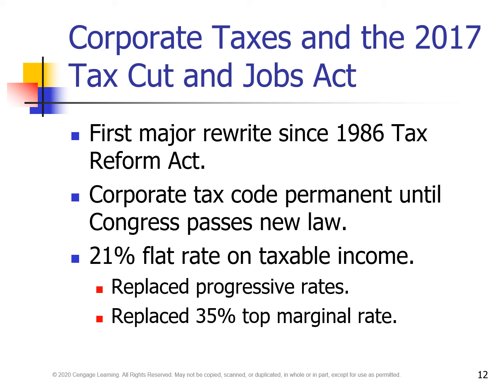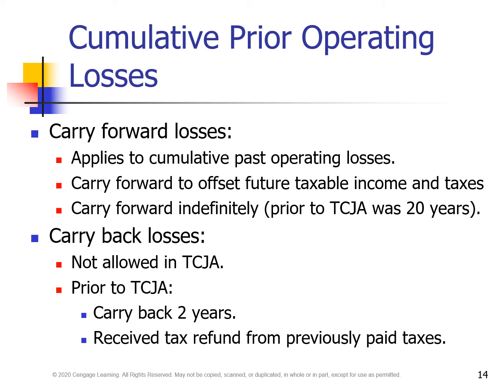Corporate taxes and the 2017 Tax Cuts and Jobs Act. This act is the first major rewrite since the 1986 Tax Reform Act. The corporate tax code is permanent until Congress passes a new law. There is a 21% flat rate on taxable income, replacing the progressive tax rate and the 35% top marginal rate. Cumulative prior operating losses: capital losses can carry forward, apply to cumulative past operating losses, and carry forward to offset future taxable income and taxes, and carry forward indefinitely.